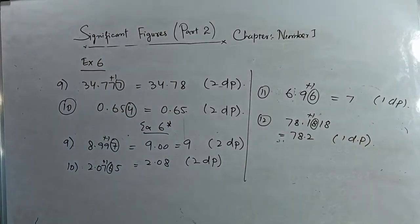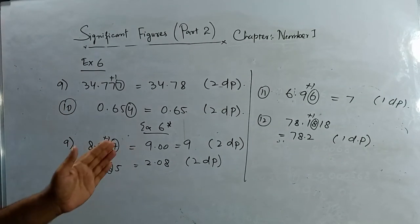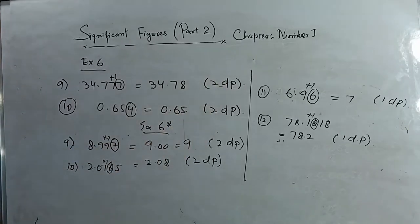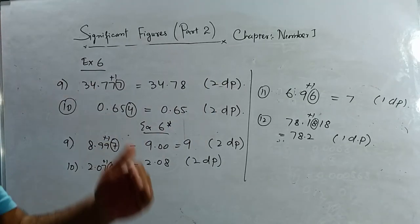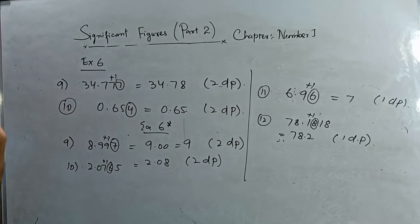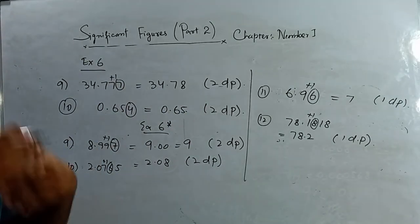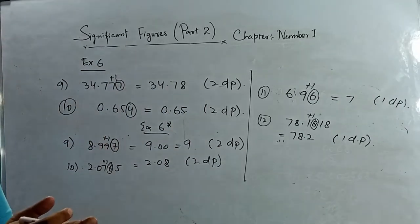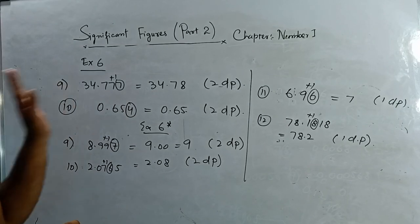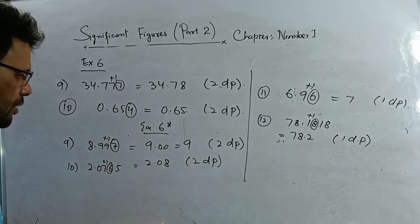So this is about decimal places. In decimal places we count digits after the decimal point. Whereas in significant figures we count from the start of the number — whether before or after the decimal — following the specific rules discussed in the first video. Thank you.